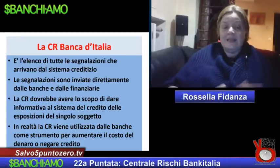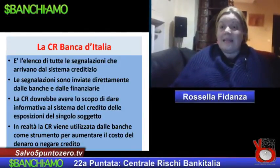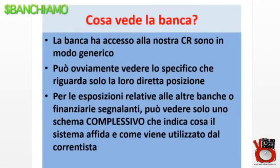Le banche utilizzano la CR per andare ad aumentare quello che è il rating, sia della persona fisica che delle aziende, e quindi con il discorso di Basilea 2 ad aumentare il tasso applicato. Ma cosa vede realmente la nostra banca? La centrale rischi che noi chiediamo alla Banca d'Italia contiene un resoconto di tutto quello che viene indicato dalle banche e dalle finanziarie. La nostra banca vede la CR specifica solo relativa al proprio istituto, mentre per le esposizioni relative ad altre banche vede solo uno schema totale complessivo.